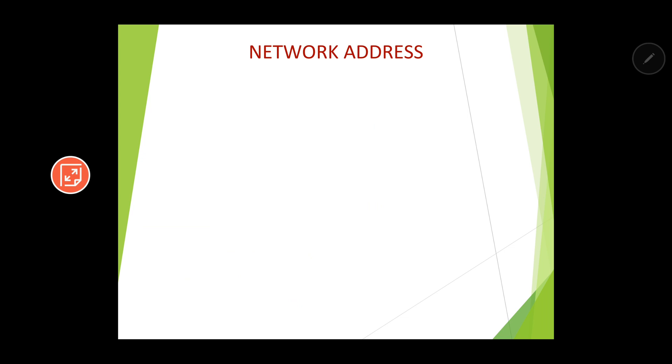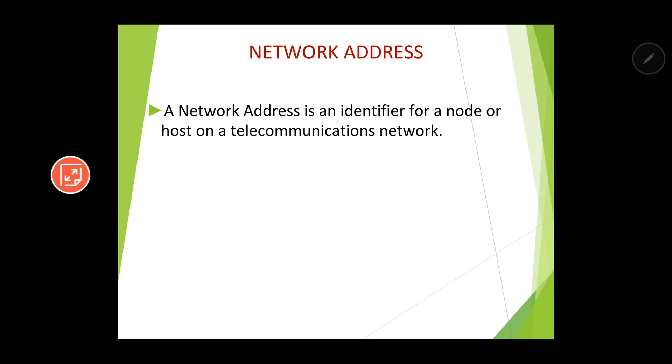All of you have a home address. Let's say you do online shopping for some object — after you add the products to the cart, you need to put your home address. Why is that home address required? The home address ensures that the object will come only to your house and not to someone else's house. Similarly, when communication happens between nodes in a network, it must be ensured that the data goes only to the intended recipient.